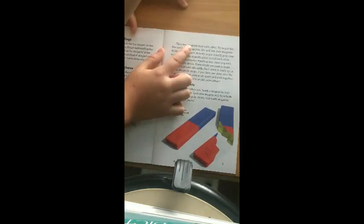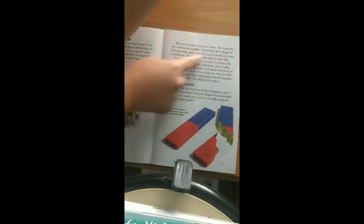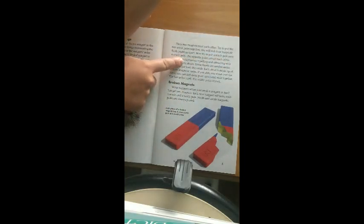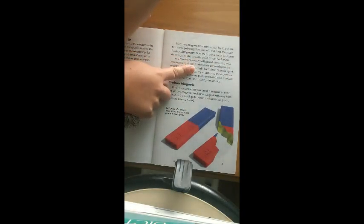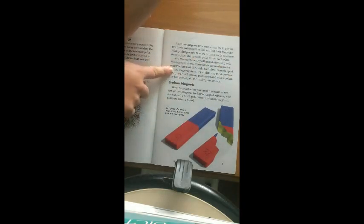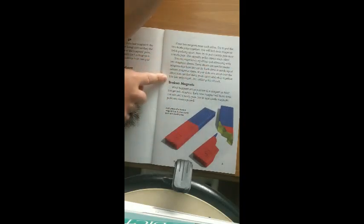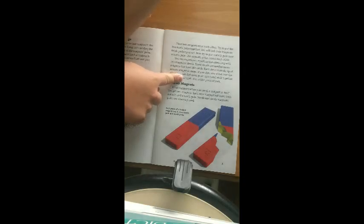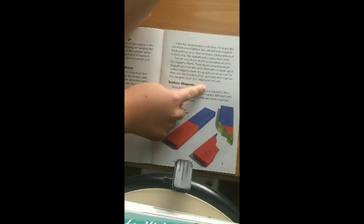Place two magnets near each other. Try to put the two north poles together. You will feel their magnetic fields pushing apart. Now try to put a north pole near a south pole. The opposite poles attract each other. You can experience repelling and attracting with two magnetic sheets. These sheets are used to make magnets that look like cards. Each sheet is made up of narrow magnetic strips. If you slide one sheet over to the other, you can feel them push apart and stick together. The like poles repel. The unlike poles attract.